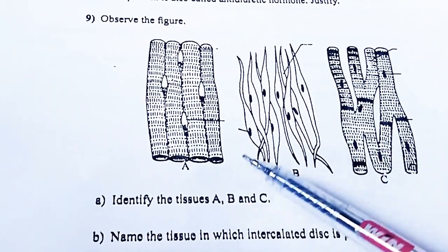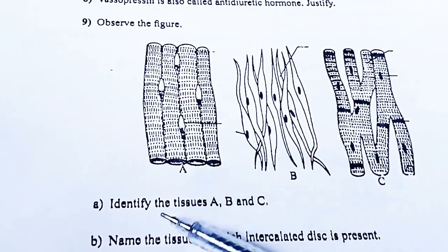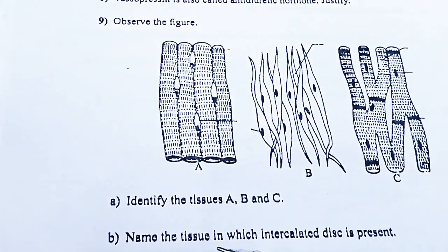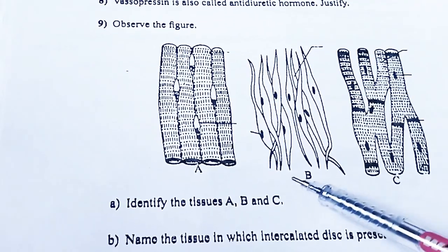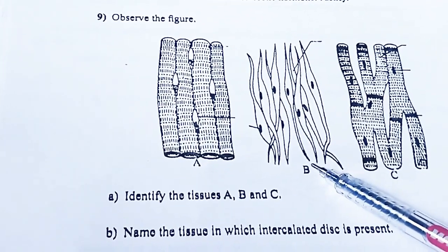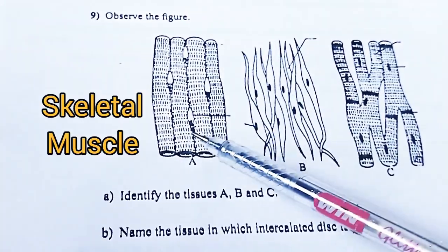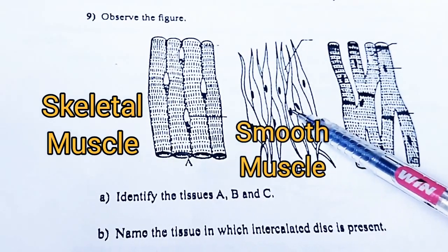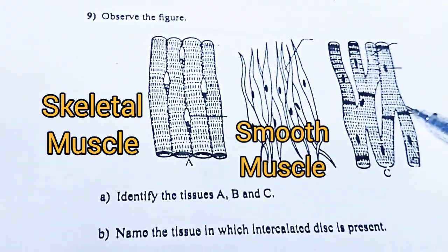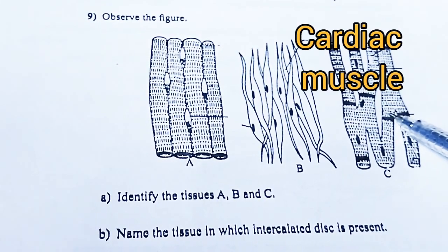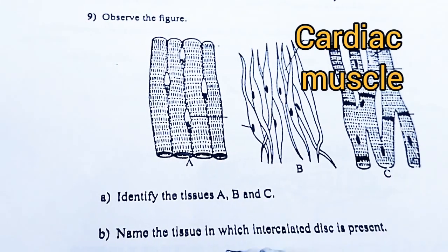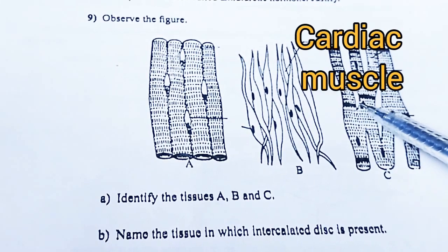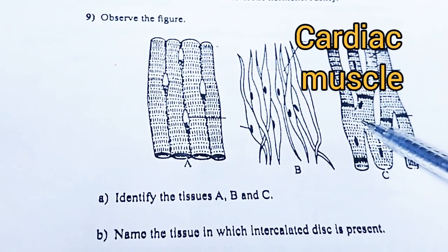Observe the figure. Identify the tissues A, B, and C, and name the tissue in which the intercalated disc is present. Answer: A is Skeletal muscle, B is Smooth muscle, C is Cardiac muscle. The intercalated disc is present in Cardiac muscle.